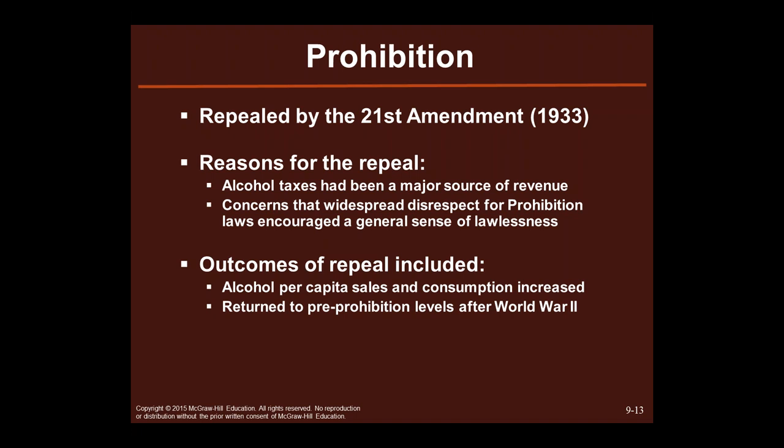The 18th Amendment, 1919, was repealed by the 21st Amendment in 1933. Why? Money. Alcohol taxes — about half of what you pay for alcohol goes to taxes, so it was a huge source of revenue. We sometimes call this the sin tax. Without those revenues, it was a problem. There was also widespread disrespect for the 18th Amendment, and the prohibition laws actually encouraged a general sense of lawlessness — once you were breaking that law, you were maybe more likely to break other laws.